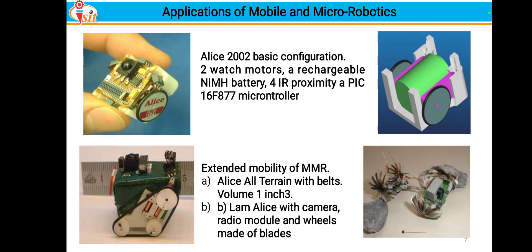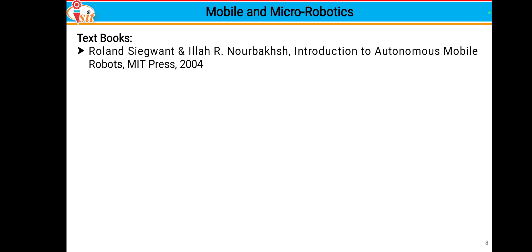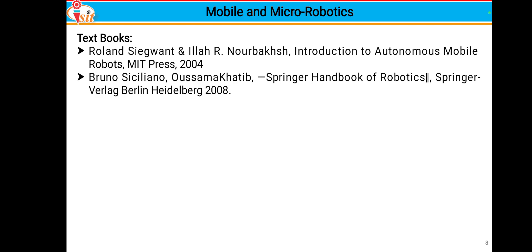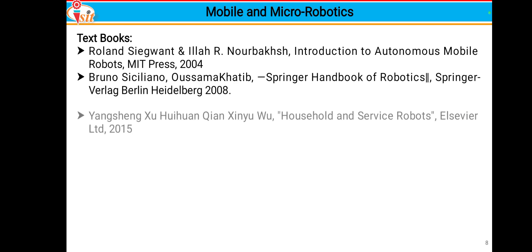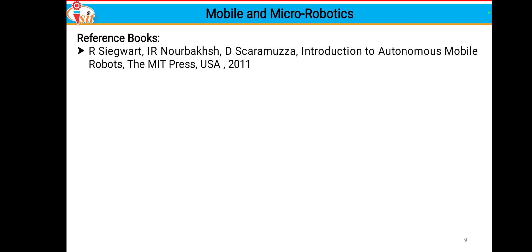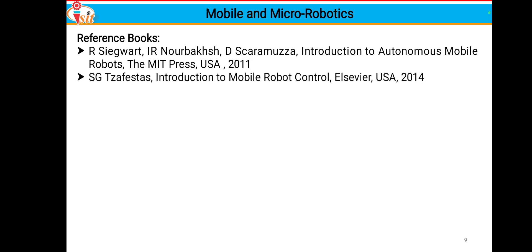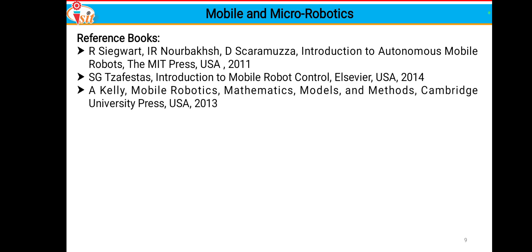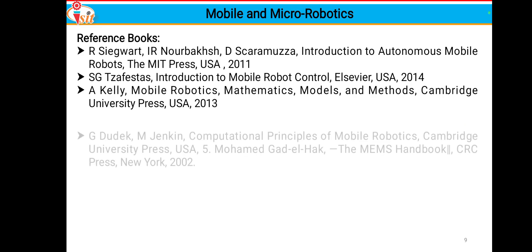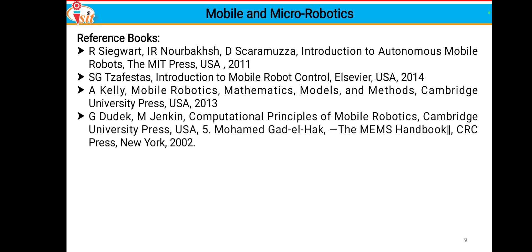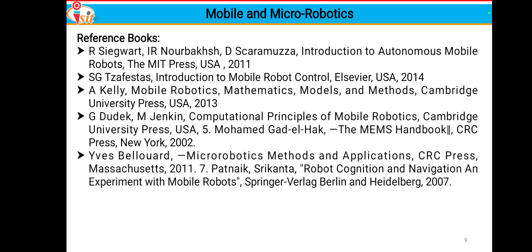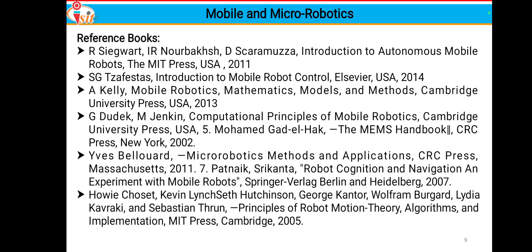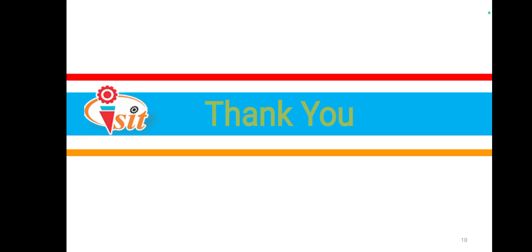These are some textbooks for the course: Introduction to Autonomous Mobile Robots, MIT Press 2004; a Robotics book by Springer; and Household and Service Robots. Reference books include: An Introduction to Autonomous Robots, MIT Press USA; Introduction to Mobile Robots; Mobile Robots: Mathematics, Models and Methods, Cambridge University Press; and The Principle of Robot Motion: Theory, Algorithms and Implementation, MIT Press. Thank you for watching — I hope most of you will opt for this as Open Elective 3.